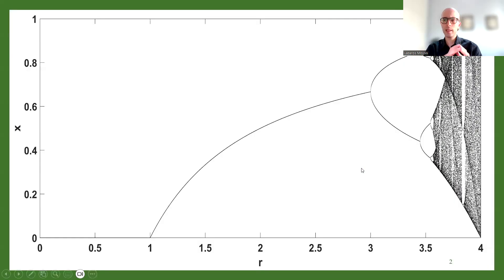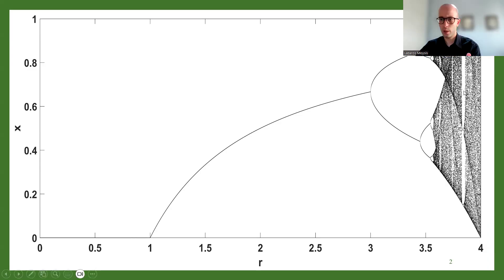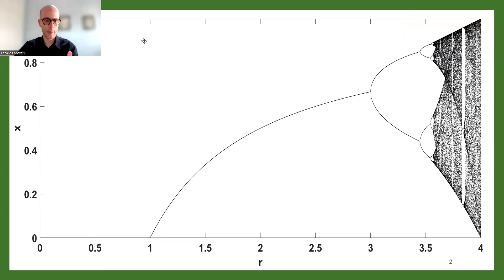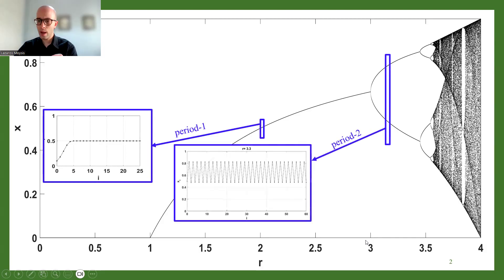Everybody knows about the bifurcation diagram — it's a very well-known graph used in nonlinear analysis. What it does is depict the dynamical behavior of the map as we change one specific parameter value. This is the classic bifurcation diagram for the logistic map. For different values of the parameter, for example for r equals 2, it shows that the system has period-one behavior. For r equals 3-point-something, we have period-two behavior, and this is why we have two dots in the bifurcation diagram.